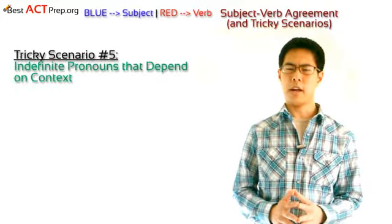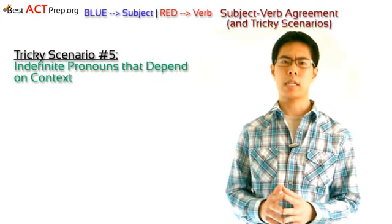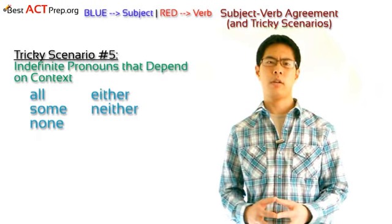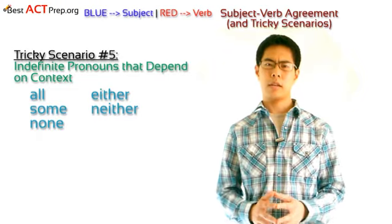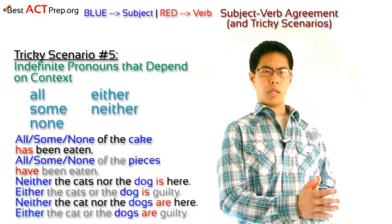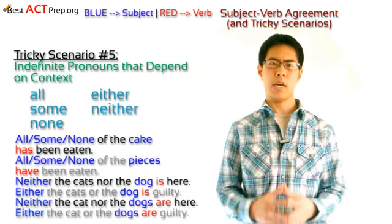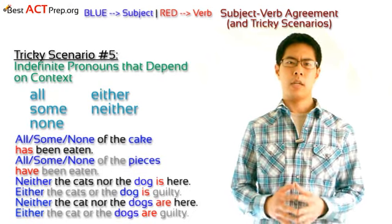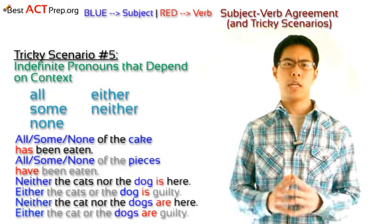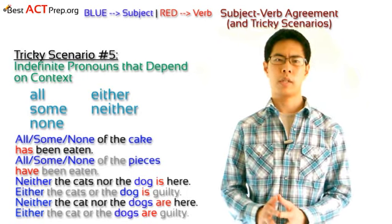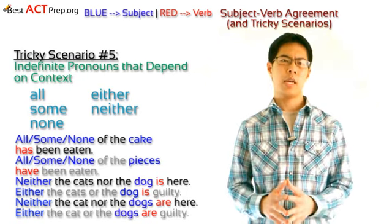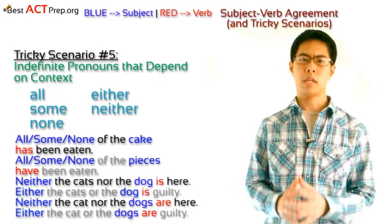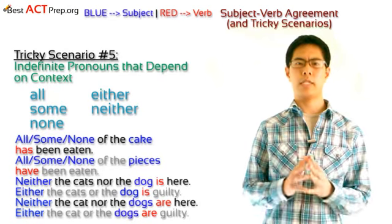Tricky scenario number five: indefinite pronouns that depend on the context. The indefinite pronouns all, some, none, either, and neither can be either singular or plural depending on the context. Take a look at the following examples: 'All/some/none of the pieces has or have been eaten.' 'Neither the cats nor the dog is or are here.' 'Either the cats or the dog is or are guilty.' For the indefinite pronouns all, some, and none, we need to see if what they're referring to is singular or plural. In our examples, cake is singular and pieces is plural.